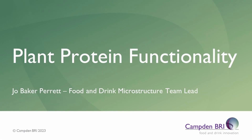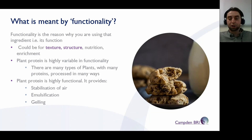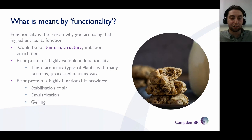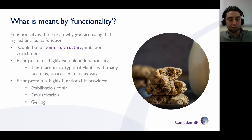One of the problems manufacturers find when using plant proteins is, A, there is such a variety of potential ingredients in the first place. There are all different types of legumes, even other things like potatoes. Any plant has a certain amount of protein in them and that protein can be extracted. It's quite often the materials with high protein to begin with — soy, peas, lentils — where the yield is much higher. So this is why these are some of the more common proteins found on the market.